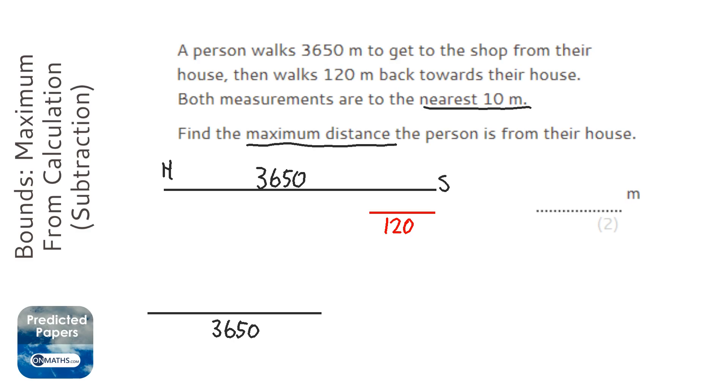The next one down from that would be 3640 if it's to the nearest 10, and the next one up is 3660. Then to find the bounds, we do the halfway points: the lower bound will be 3645 and the upper bound will be 3655.